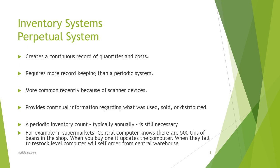With a perpetual system, you are — as the name suggests — counting your inventory perpetually, meaning all the time. It creates a continuous record of quantities and costs. Back when I trained it was very hard to do because most stock systems were manual. In the 1970s it was difficult and was really only used in organizations like banks, where they monitored cash as a high-risk item.